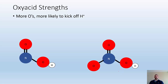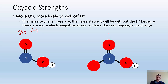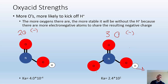The more oxygens you get, the more likely it is to kick off H+. The more oxygens there are, the more stable it will be without the H+ because there are more electronegative atoms to share that resulting negative charge. With two oxygens to handle a negative charge versus three oxygens, the more oxygens you have, the better they can handle that negative charge once hydrogen gets bumped out.